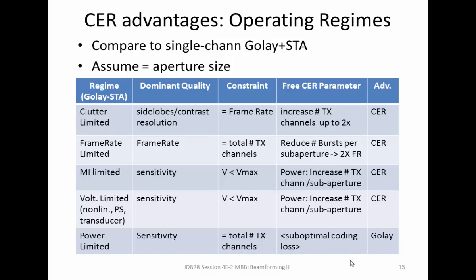By transmitting on multiple codes at different channels and amortizing the extra transmissions required by Golay over all channels, we can get: increased transmit channels in the clutter-limited case, twice the frame rate in the frame-rate-limited case, or more power in the mechanical index limited case. Golay remains better in the power-limited case, though it's unclear how you'd be power-limited with a single transmit aperture without having already hit a voltage limit, which would suggest you'd want twice the frame rate instead.